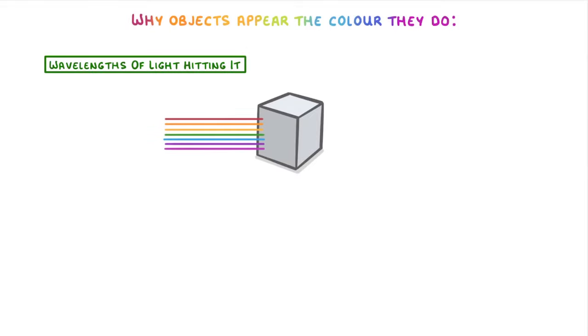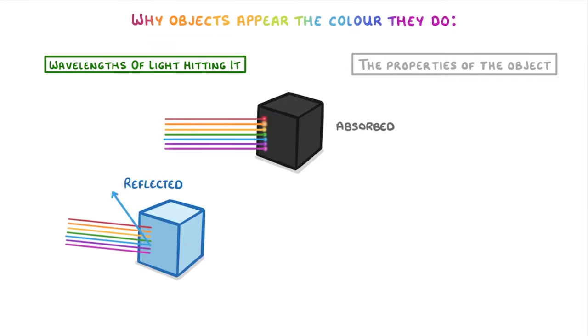Now, which particular colour an object appears depends on two things: the wavelengths of light that are hitting it, and the properties of that particular object. Together, these will determine which light rays are absorbed, reflected, or transmitted, and so determine how the object appears.